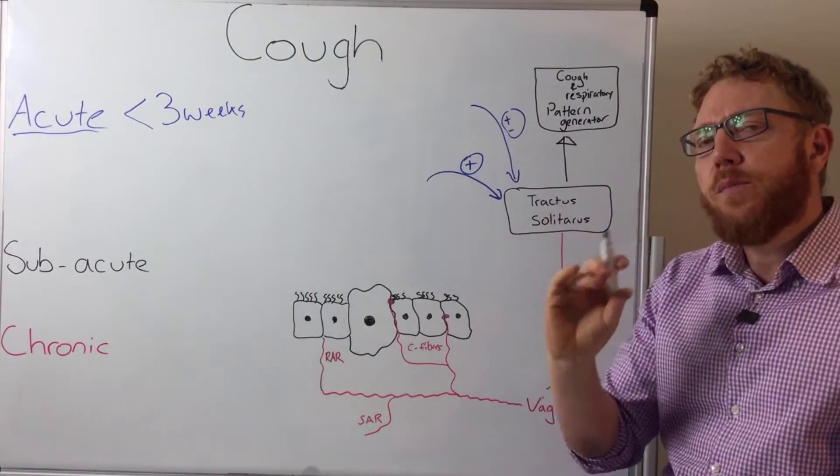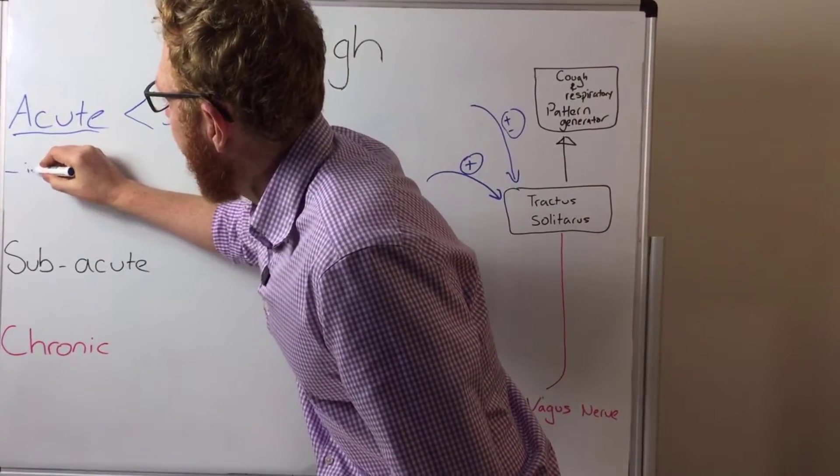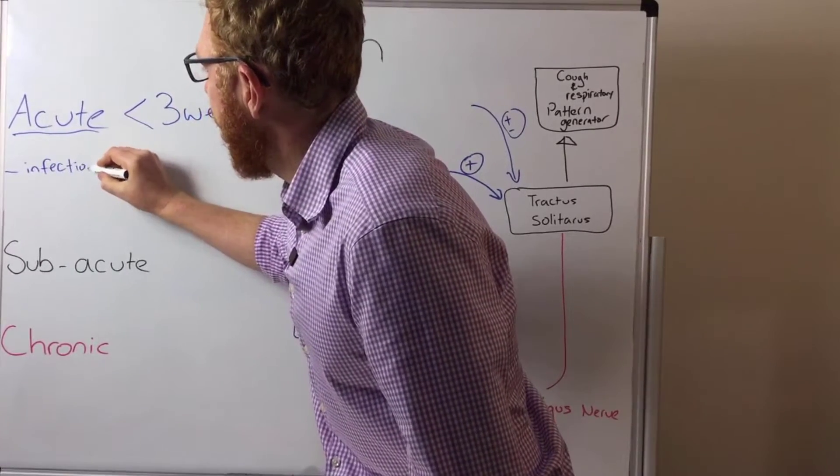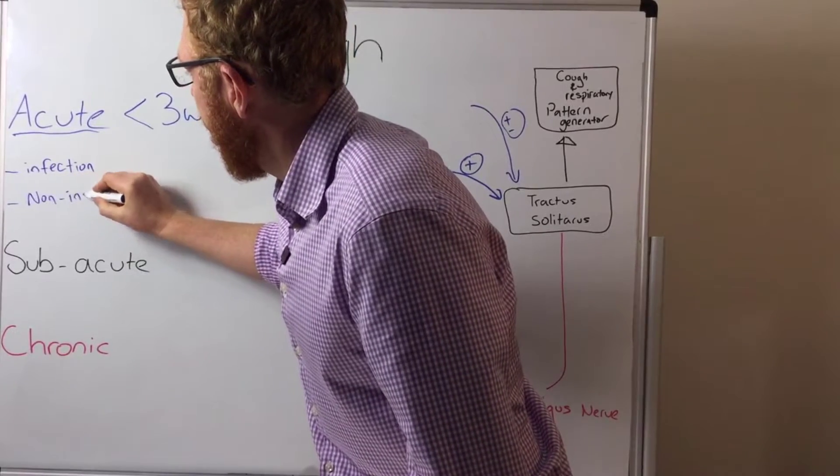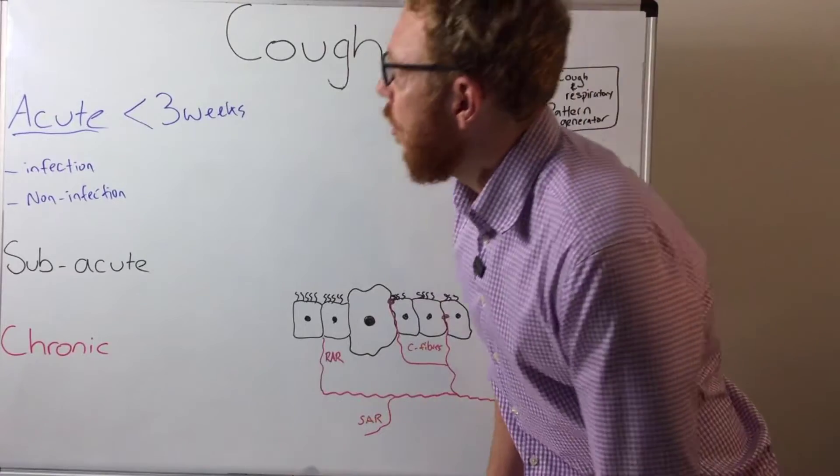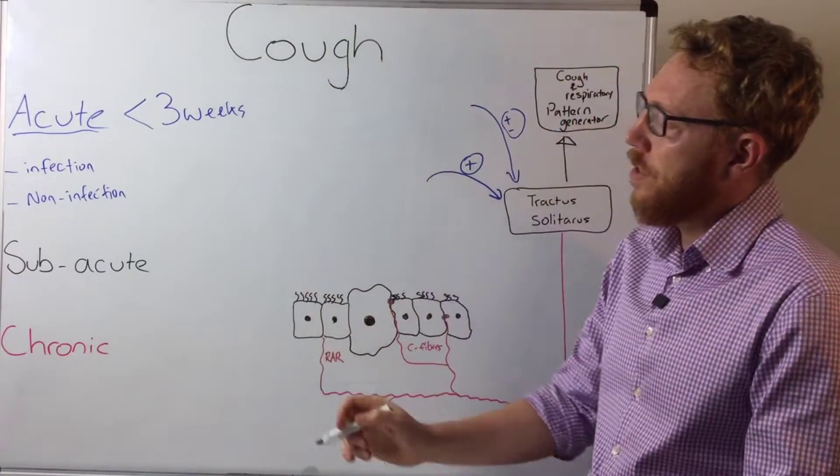Now there's two main subcategories to an acute cough. There are the infectious, and non-infectious. So this is what we're doing now is just categorizing an acute cough into two parts: infectious based or non-infectious based.